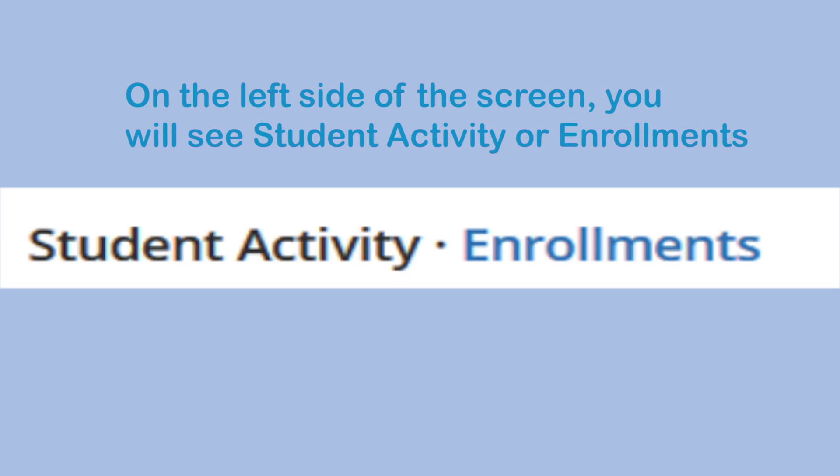On the left side of the screen, you will see an option to view Student Activity or Enrollments. Student Activity is a running record of announcements posted by your child's teachers and school staff. Enrollments allow you to see announcements class by class.